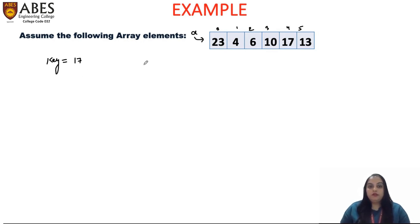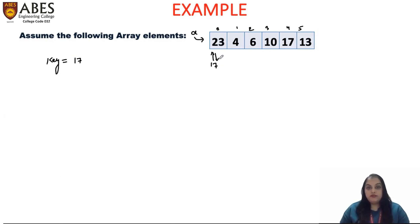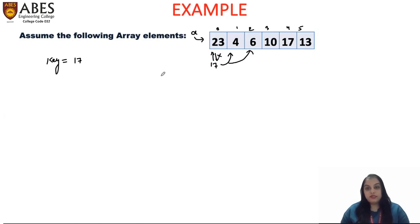Now, one by one, the first element will be compared with the key element, then the next element will be compared. The key element 17 will be compared whether it is equal to element 23 which is at the first location. Then if not, we will move ahead to the next element in the array. On comparing 17 with 4, which is not equal, we will move ahead to the next element. One by one we will keep moving to the next element until we reach that particular element or reach the end of the array.